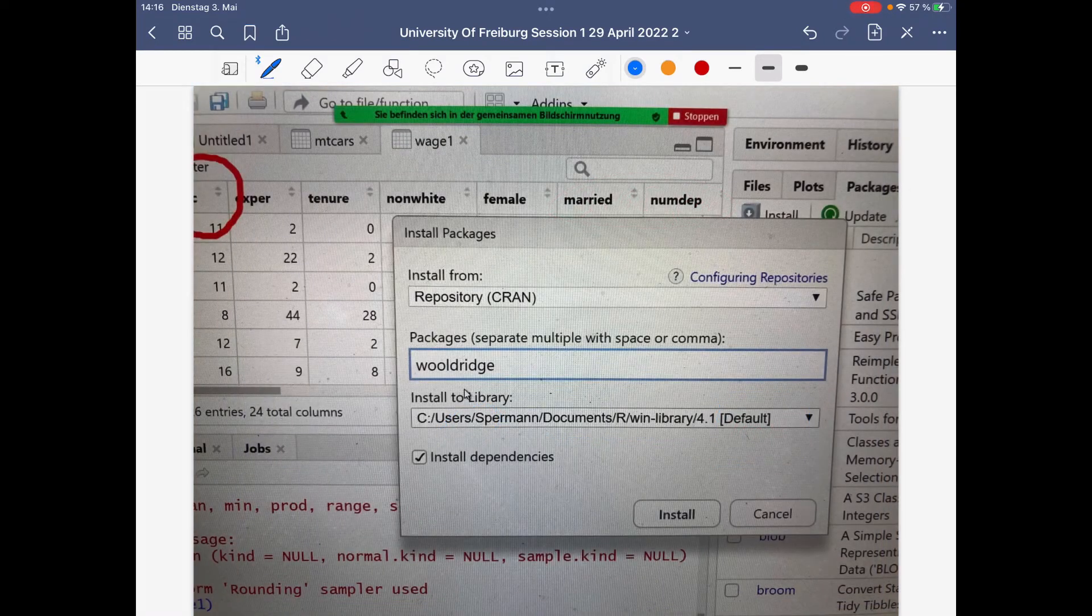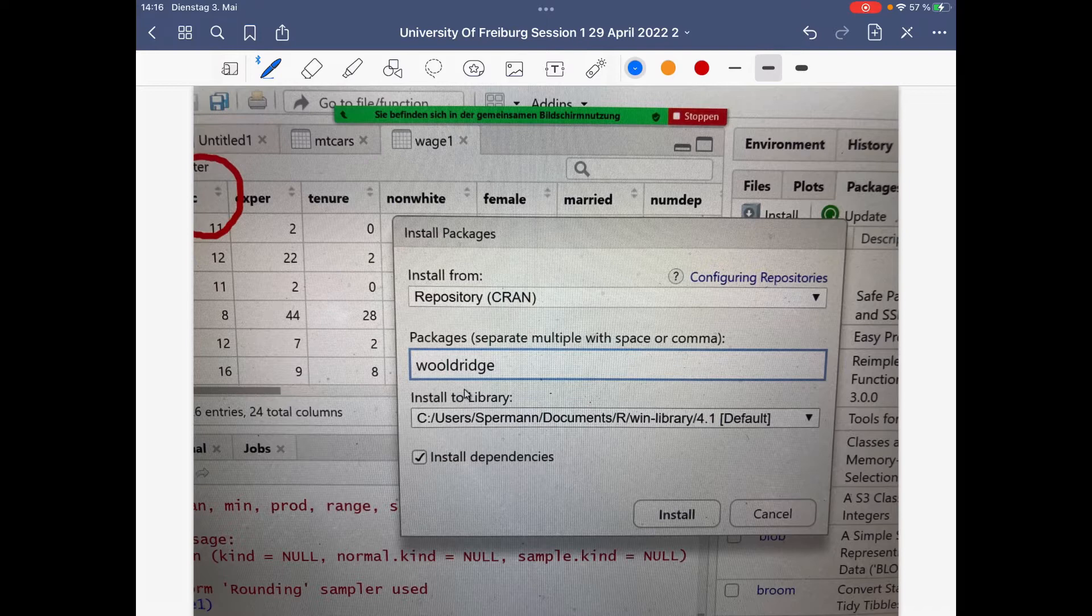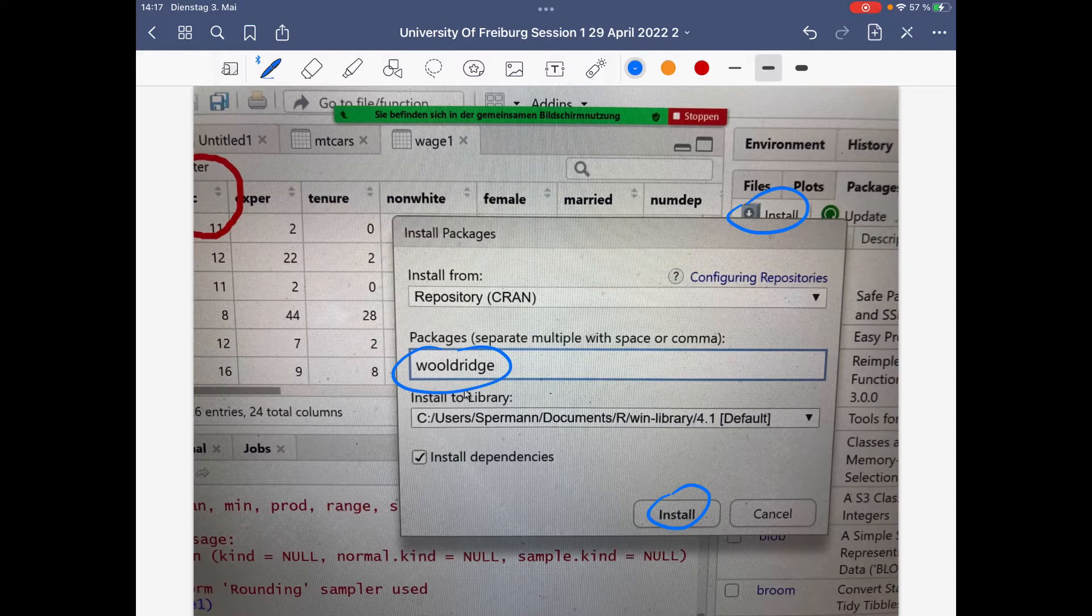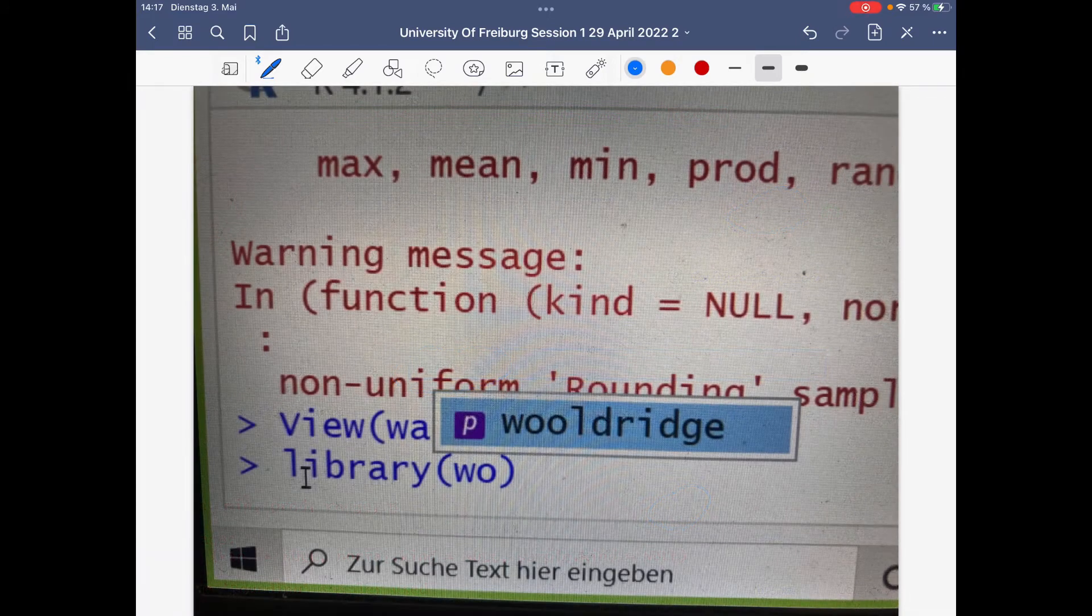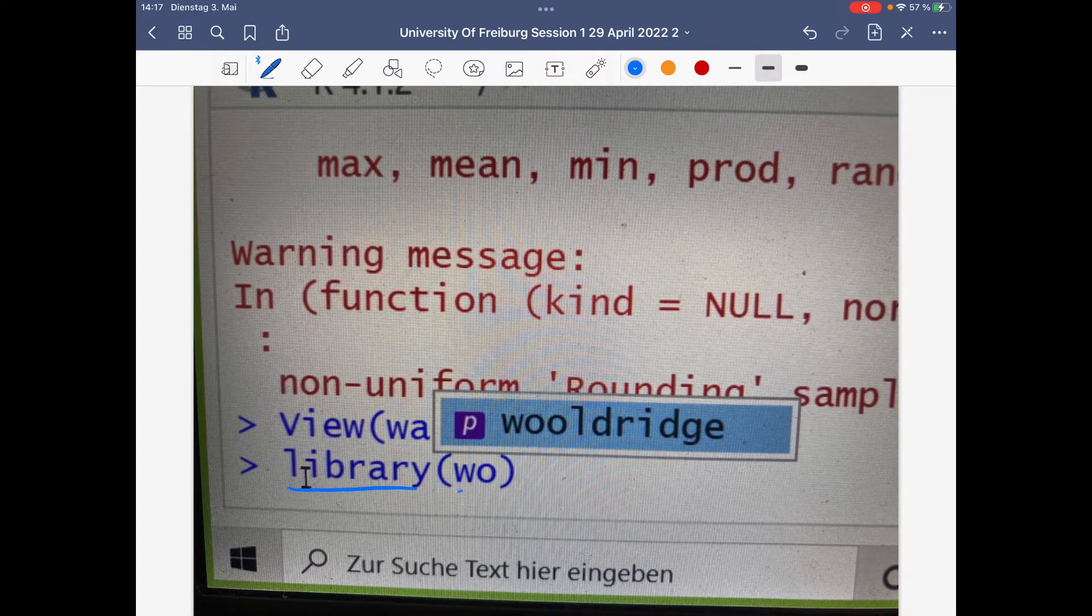To get the Wooldridge data, go to install and type in Wooldridge install. Once it's installed, then it's fine. In the second round you have to load the data set. For loading, you type in library Wooldridge, and as you can see here, this is the signal that R has already installed the package Wooldridge.